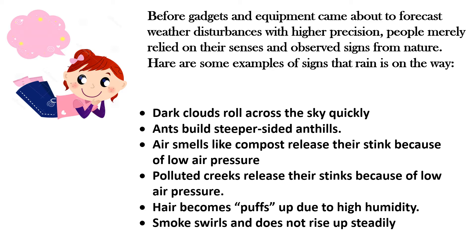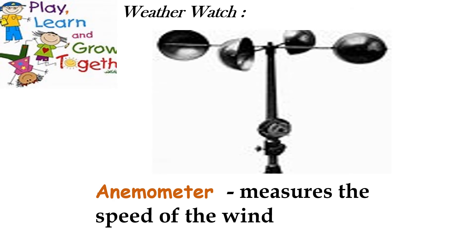Air becomes packed up due to high humidity. Smoke swirls and does not rise up steadily. These are the signs that rain is on the way — before gadgets and equipment came about to forecast weather disturbances, these were the possible signs that rain was coming.